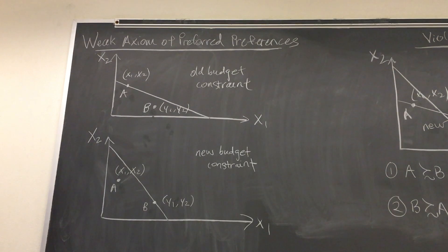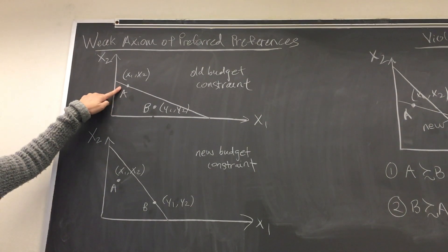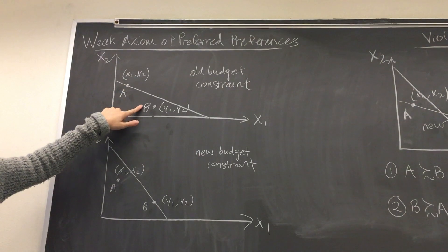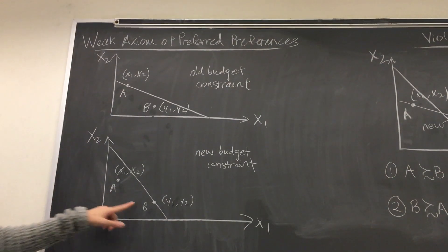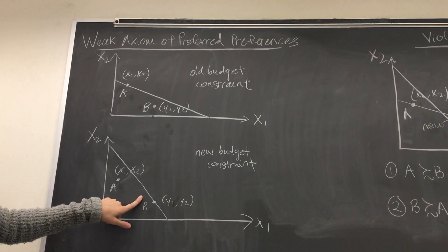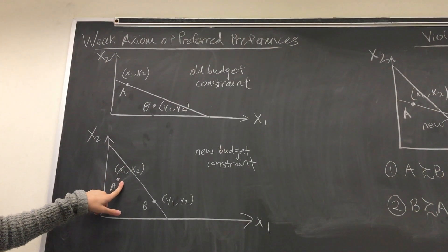In other words, if bundle A was directly revealed preferred or chosen over a feasible bundle B under the old budget constraint, then given a new constraint, it is not possible that bundle B would now be chosen over bundle A in the given case that both are feasible.